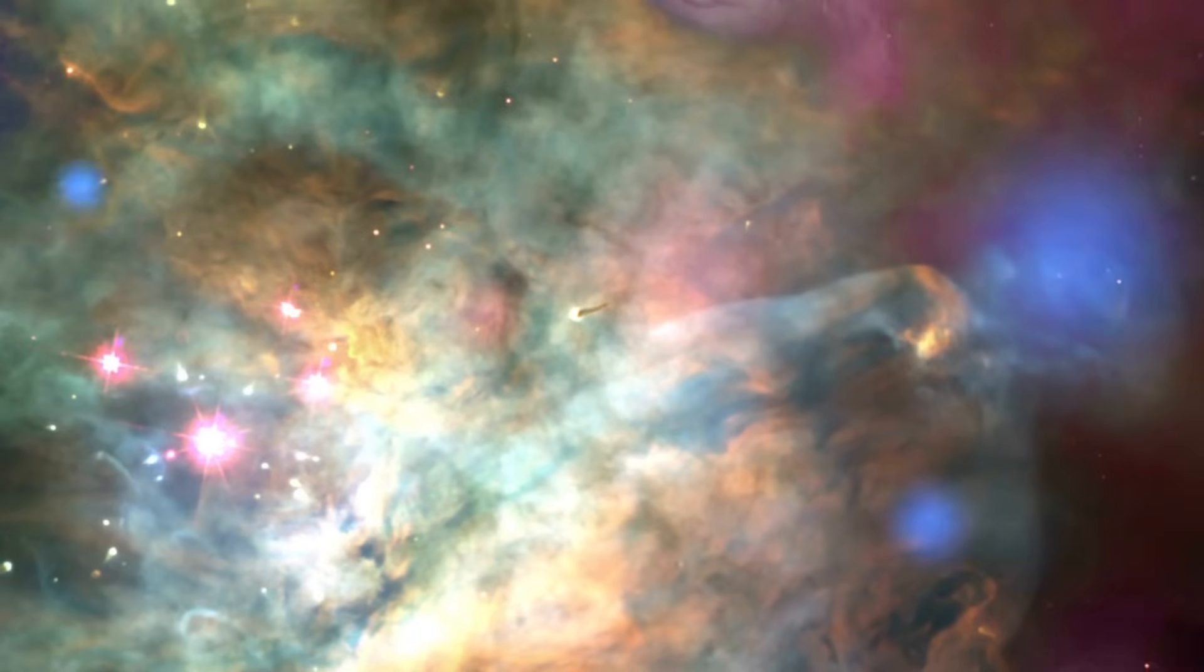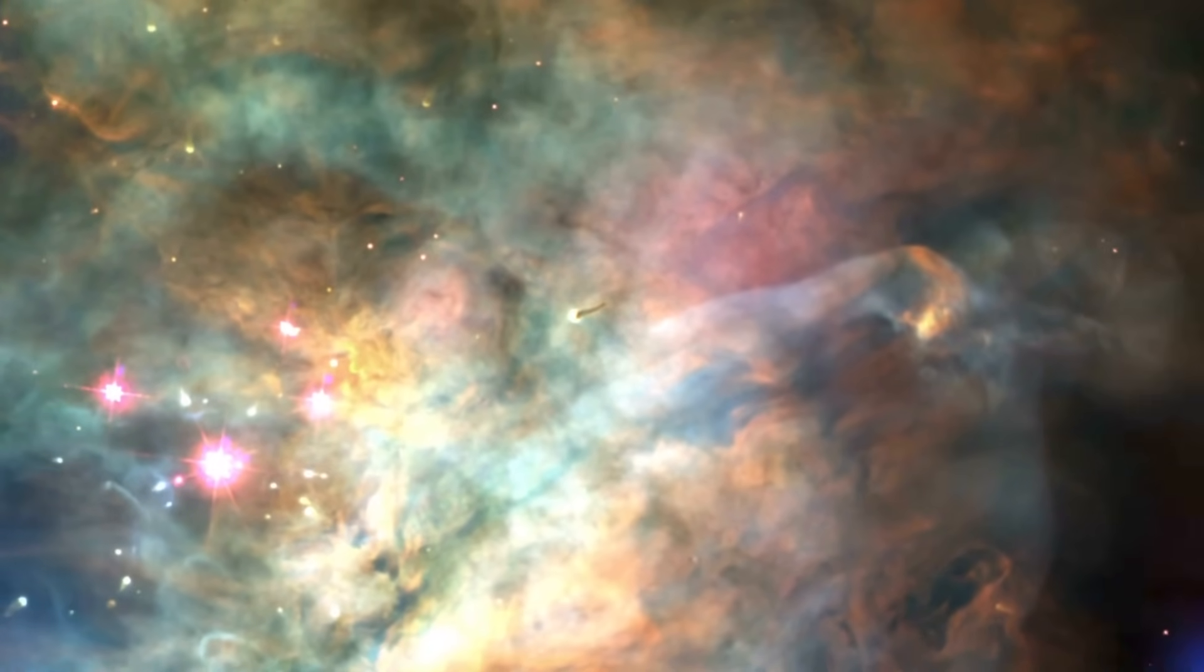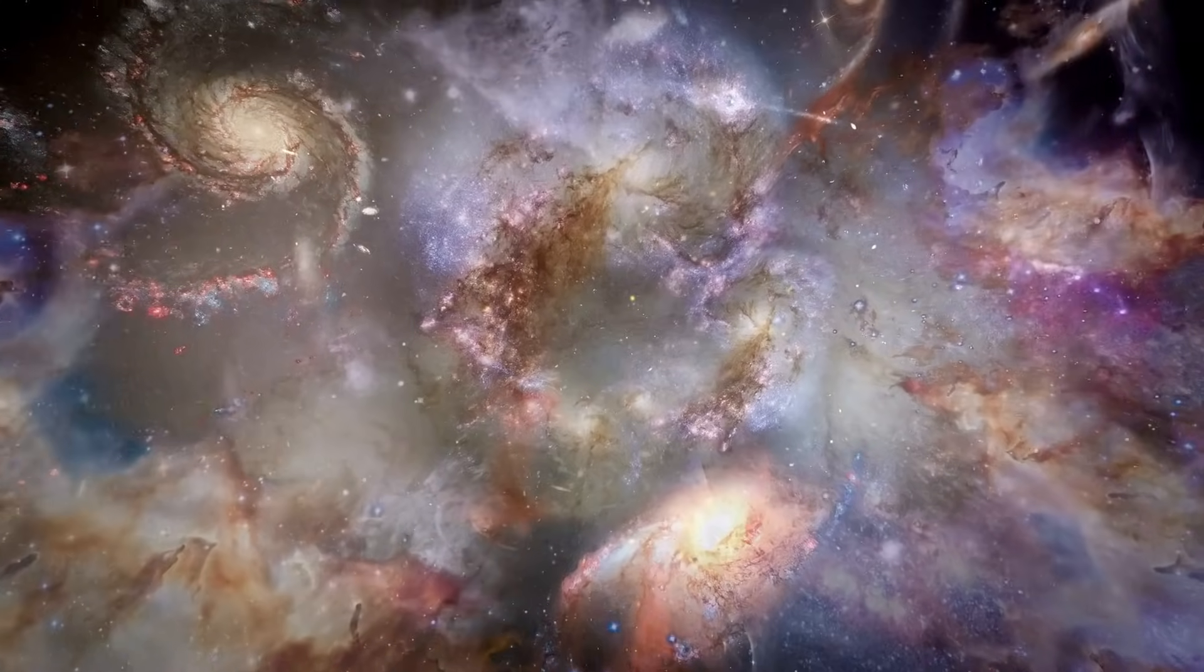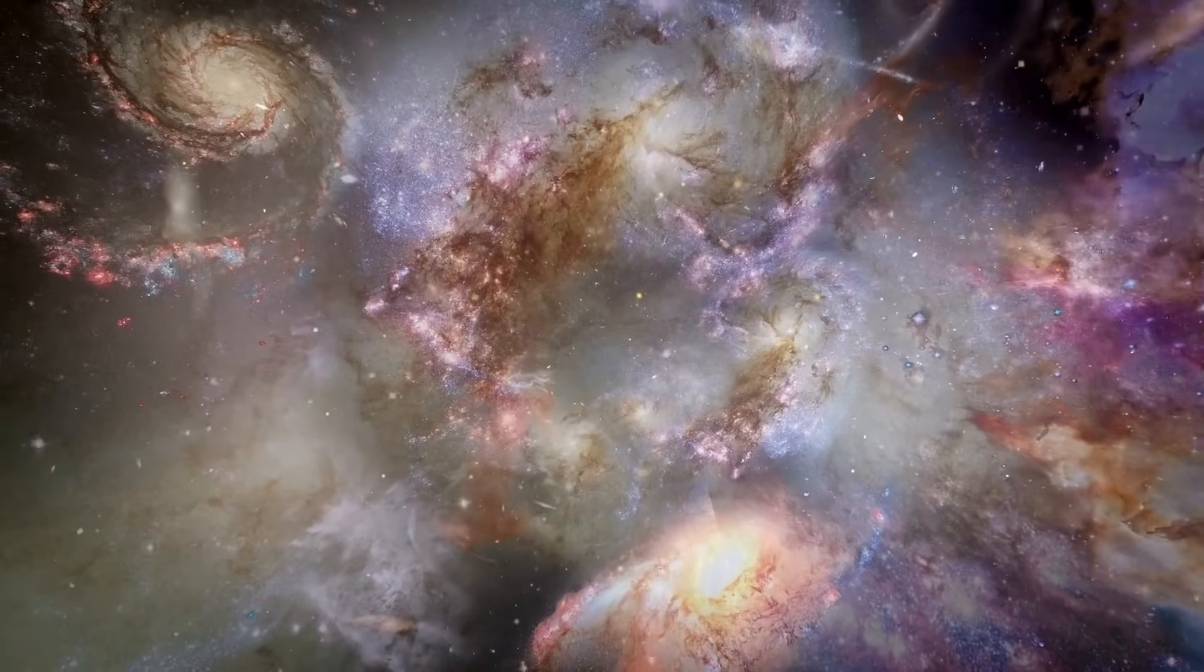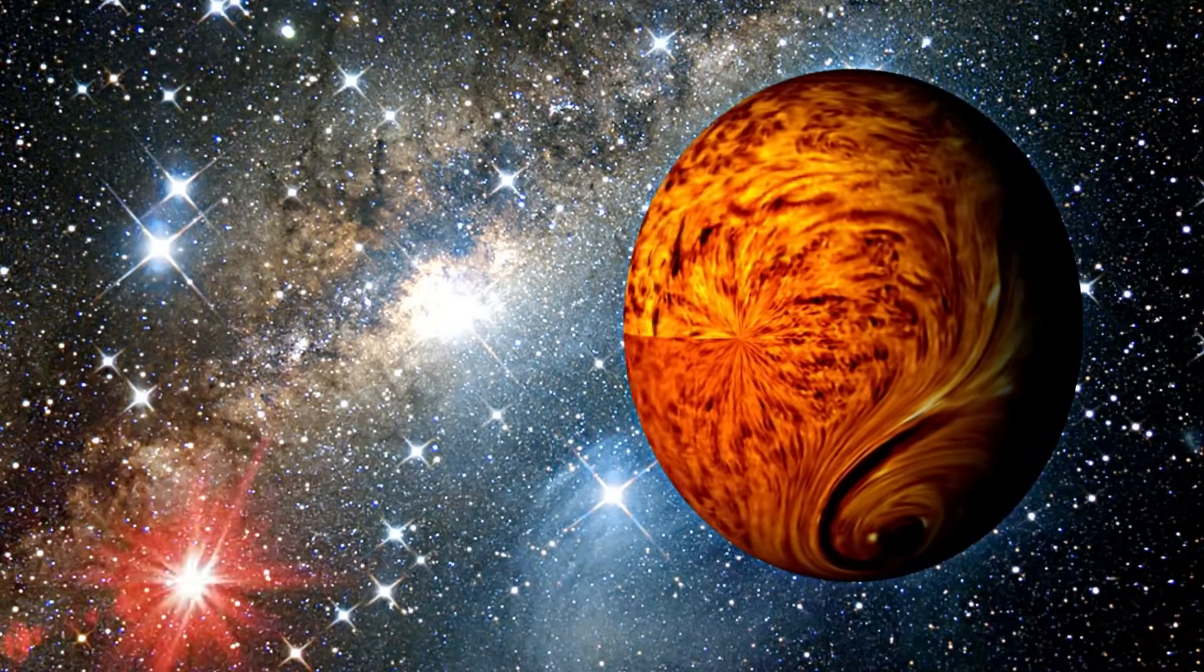One of the most fascinating aspects of Betelgeuse's evolution is the fact that it's in a relatively rare phase of its life cycle. As a red supergiant, Betelgeuse is nearing the end of its life, but its path to supernova isn't as straightforward as it might seem.